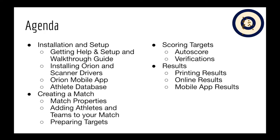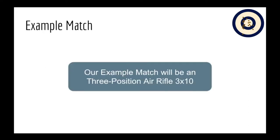The third section will be on scoring targets, including Orion's autoscore feature and the score verification process. The final section is on results — we'll cover the three big ones: printing results, online results, and results within the Orion mobile app. Throughout the webinar we'll primarily focus on a single example: a three-position air rifle 3x10 course of fire, the most common rule book and course of fire used in Orion. Almost everything today will be relevant to other supported disciplines as well.